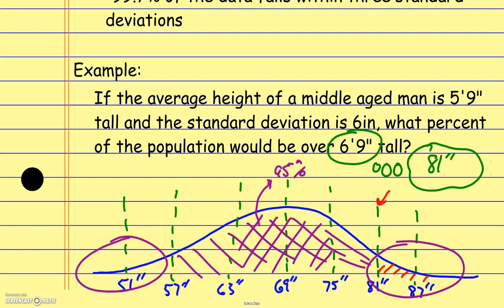We don't have both of those tail pieces — we only have one. So just this piece over here, colored in red, is going to be two and a half percent. So 2.5% of the population falls into that category. That makes sense: most people are around a certain height, and as you go further to the extremes you get fewer and fewer people. There are not a lot of people in the world above seven or eight feet tall — these are very extreme cases, and the bell curve is very short at that spot.